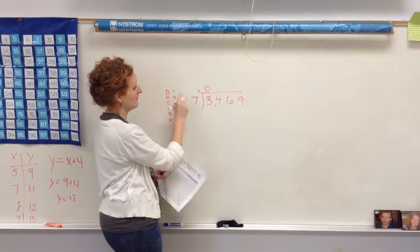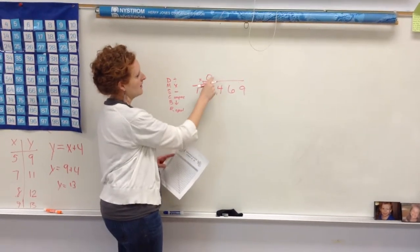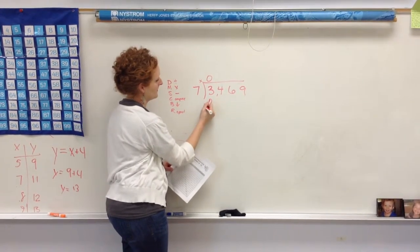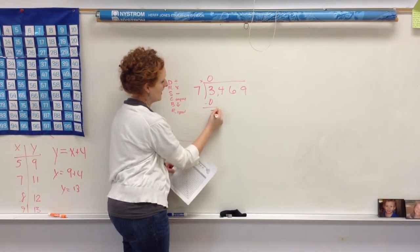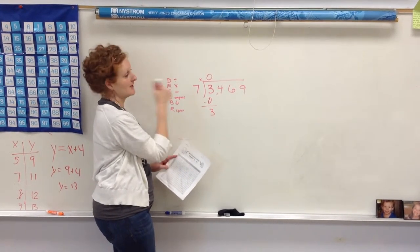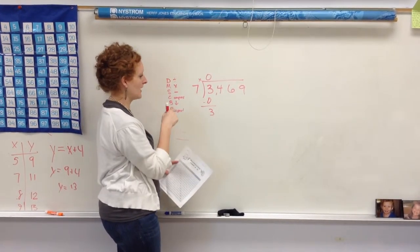So now I've divided. Now I'm going to multiply. And 0 times 7 is 0. So now I'm going to subtract, bring it down, 3. So now I'm going to compare. Is 3 less than 7? Yes, as long as it's less, I'm doing good, and I can keep going.